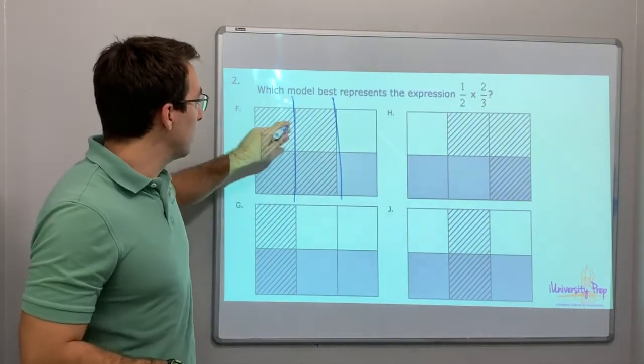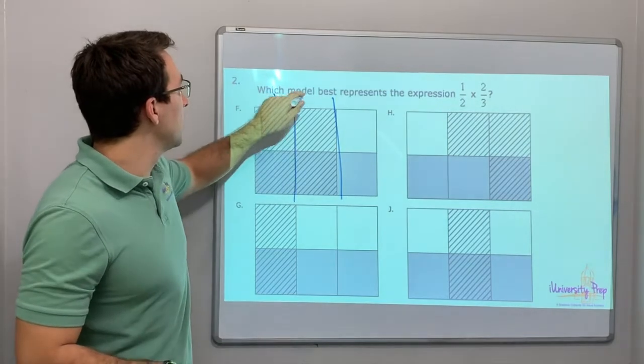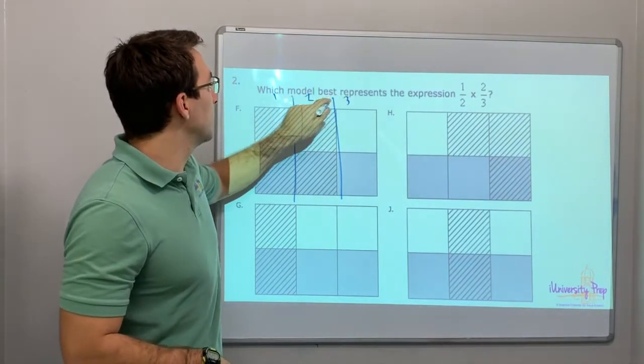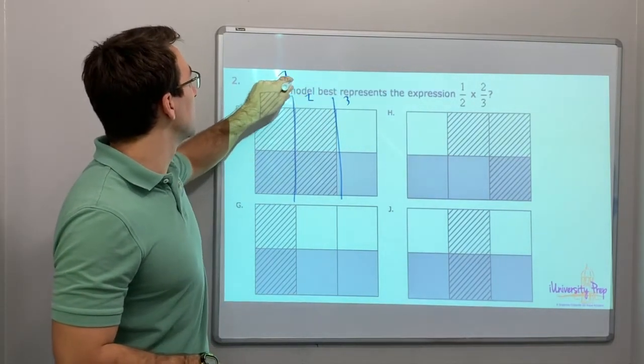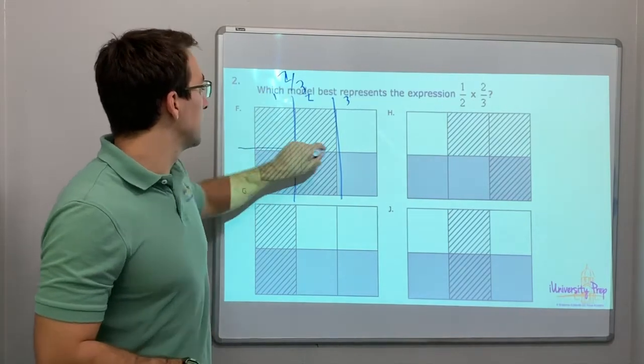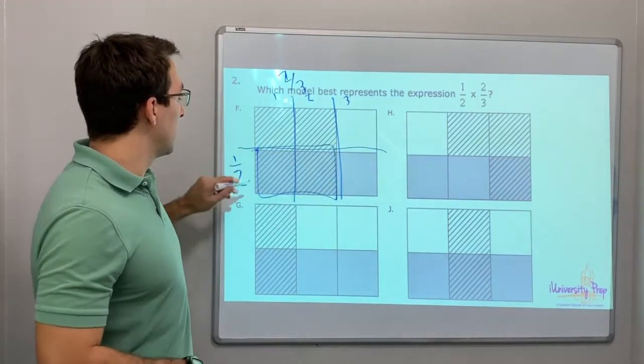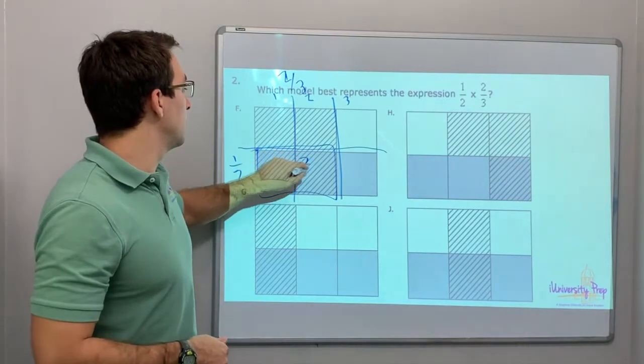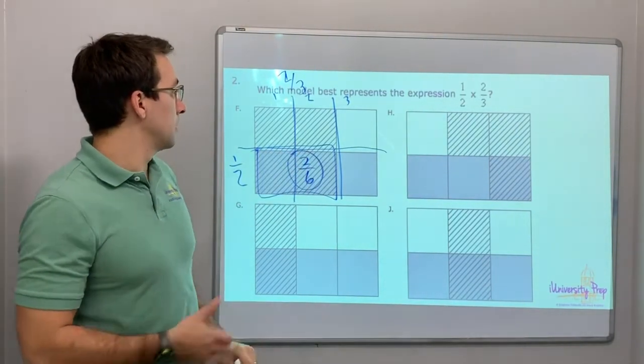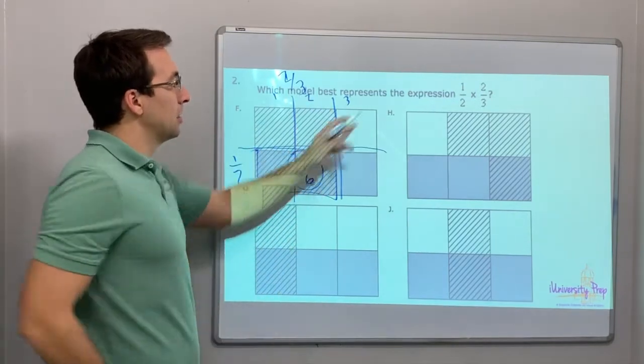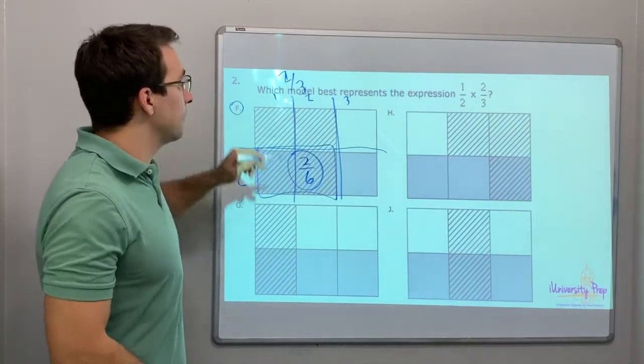This is divided by three, right? So one, two, one, two, three. So that is two-thirds times one-half. Right here. That equals two-sixths. What's our answer? Well, that's it. Two-thirds times one-half. F is our answer.